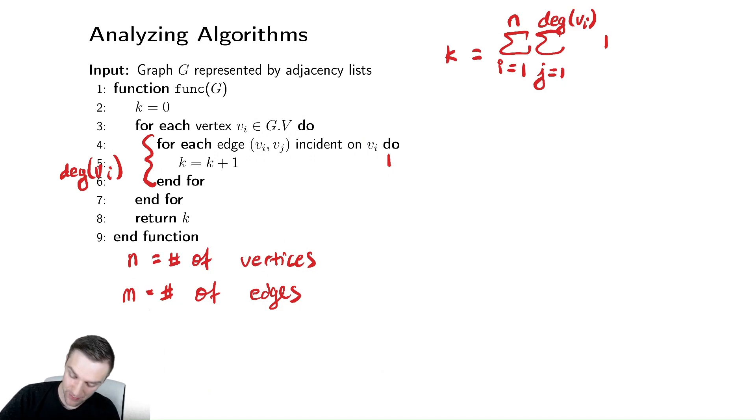Now let's analyze the summation. This is k is equal to the sum from i equals 1 to n of that inner summation just collapses to the degree of vi times 1, which is the degree of vi. And then by the handshaking lemma that we discussed before, this must equal 2 times m. So that is the value of k upon the termination of this function.